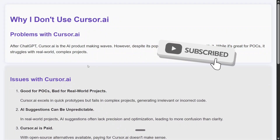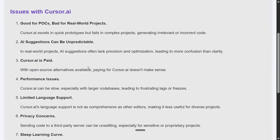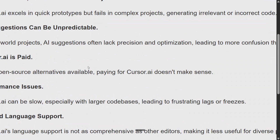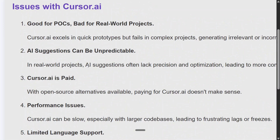There are certain problems that I have figured out with Cursor.ai that I would like to share. It is good for POCs — no doubt — to build out small projects. But it's bad for real-world projects where you have multiple files and multiple dependencies. Cursor very quickly gets confused. It is good with basic toy projects, as most LLMs are, but not with big projects.